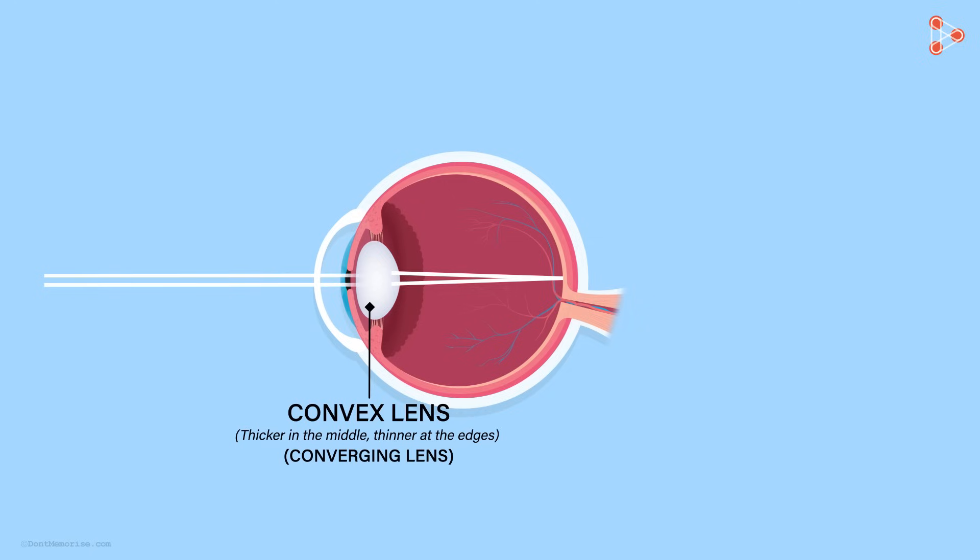In a normal regular eye, this point is somewhere here, on this inner boundary called retina. Why do I say a normal eye?